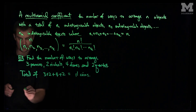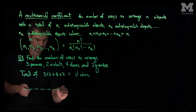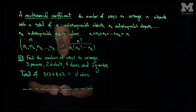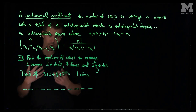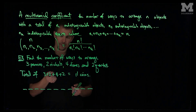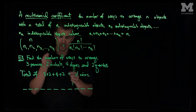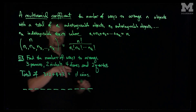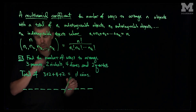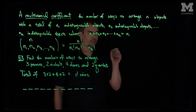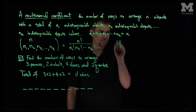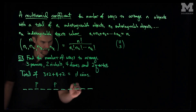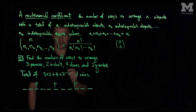So we have 11 slots. We have to choose 3 slots for the pennies — the pennies are indistinguishable. Similarly, the 2 nickels are the same, the 4 dimes are all dimes, and the 2 quarters are identical. From these 11 slots, we can choose 3 spots for the pennies, giving 11 choose 3 ways to place the pennies.